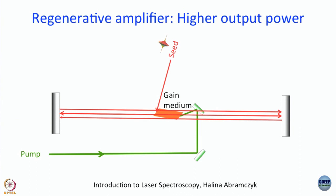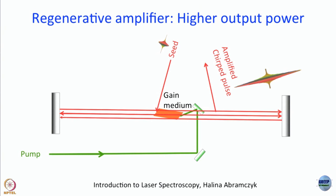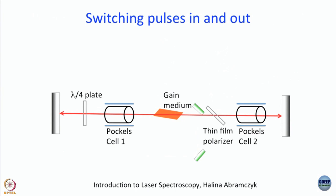It goes around in the cavity, and in every round trip the beam gains energy — gets amplified. After the required number of round trips, you have some way of switching it out, and what you switch out is the amplified chirped pulse. The answer for how you do the switching comes from what we learned a few modules ago: acoustic-optic modulators, electro-optic modulators, Q-switch. The answer here is Q-switch, specifically two Pockels cells, a quarter-wave plate, and a thin-film polarizer.